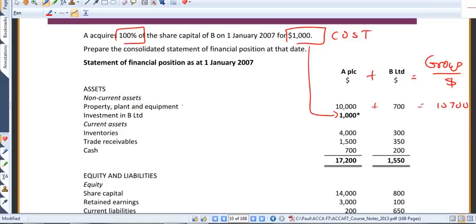We're going to do that for most of the assets and the liabilities that exist in A and B. For example, we're going to do that for property, inventories, receivables, and cash.